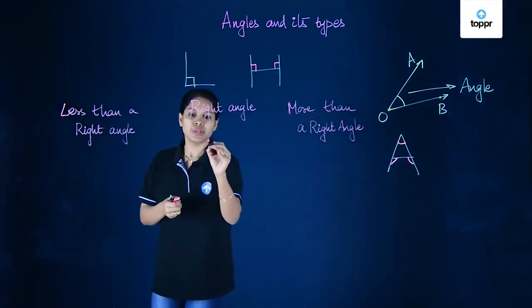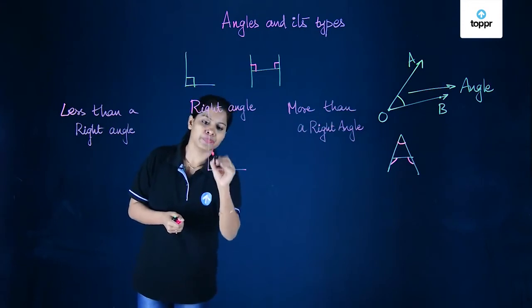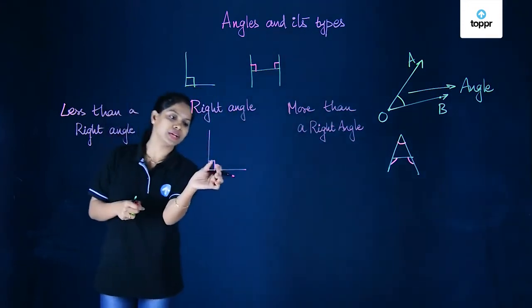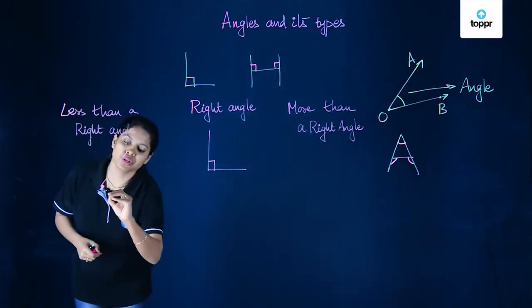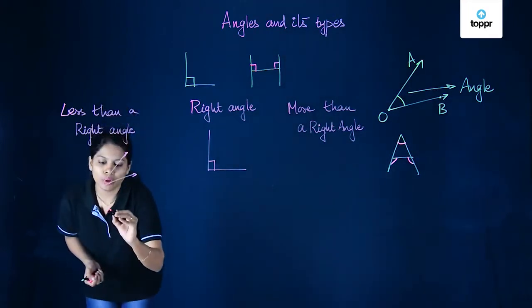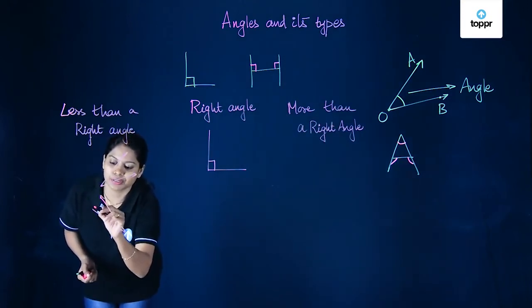Now if we look at this, this here is a right angle. We have already seen. So if we try to draw angles that are less than a right angle, it should be less than this. Here's an example of an angle that's less than a right angle, and this also here is less than a right angle.